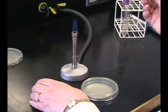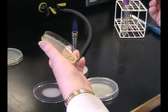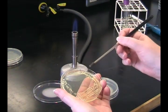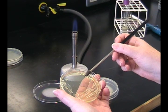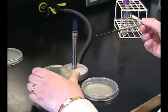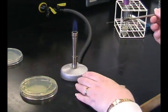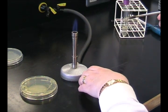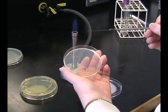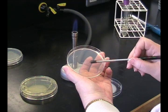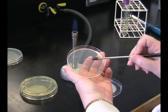Using your flamed and cooled loop, take a plate and remove an isolated colony from the plate. Place the lid. You're now going to streak this onto a brand new agar plate. First, you make a primary streak onto the plate.